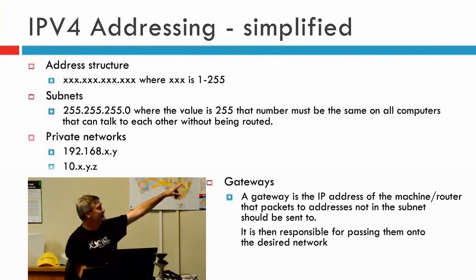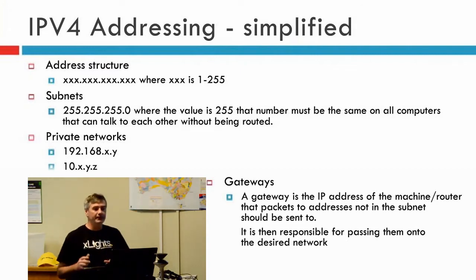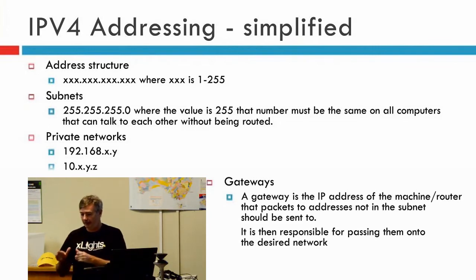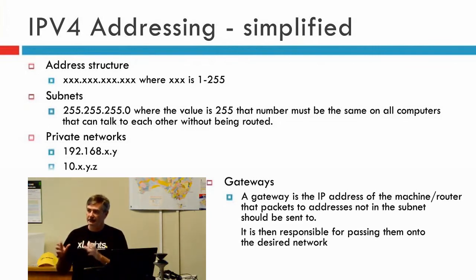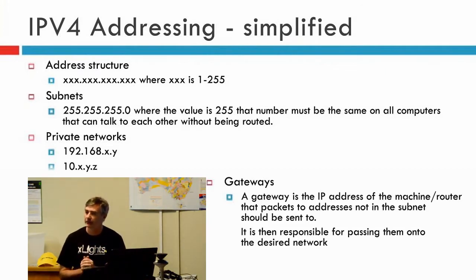The structure is that there are four numbers between 1 and 255. You can use zero in some circumstances, but that's not normal. A subnet is basically a way to parcel up your address space. Only machines that are in the same subnet can talk directly to one another. Things that are in other subnets can talk to one another, but only via a router.